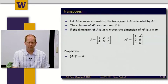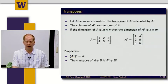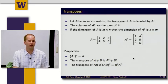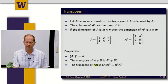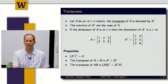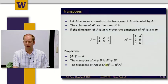Some properties of the transpose: first, if I take A transpose and transpose it again, I just get A back. Second, the transpose of a sum — so (A + B) transpose — equals A transpose plus B transpose. It gets more interesting with products: the transpose of a matrix product AB equals B transpose A transpose. So transposing the product also reverses the order, just like with inverse matrices.